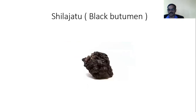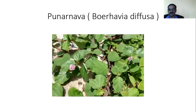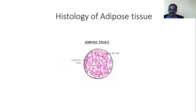Shilajatu — as per Sushruta Samhita, shilajatu is the best remedy for obesity. In hypothyroidism there is obesity and hypercholesteremia, so shilajatu is a better preference. Triphala has virachana (laxative) action; it consists of haritaki, vibitaki, and amalaki, and is also useful in hypothyroidism. Punarnava (Boerhavia diffusa) is a diuretic drug which also has action on hypothyroidism.